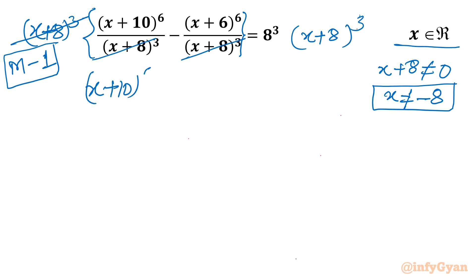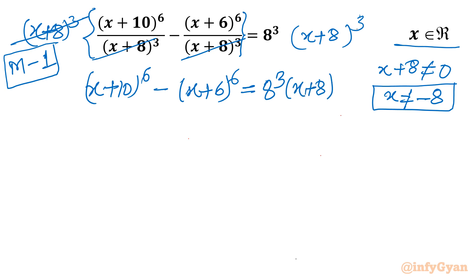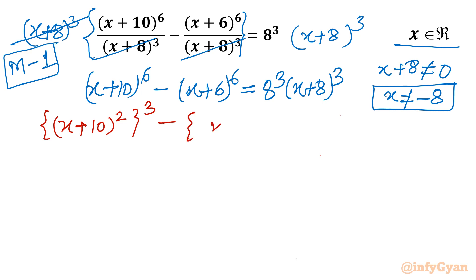Now let me rewrite the given exponents. We can write (x+10)^6 as [(x+10)^2]^3 since 2 times 3 is 6. Similarly, (x+6)^6 can be written as [(x+6)^2]^3. So the equation becomes [(x+10)^2]^3 minus [(x+6)^2]^3 equals 8^3 times (x+8)^3.